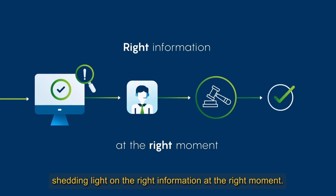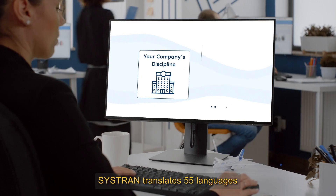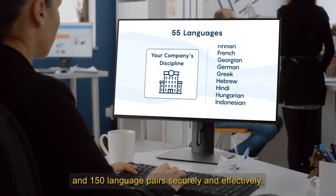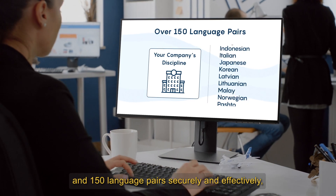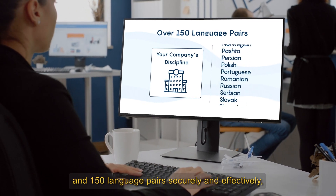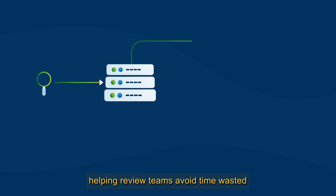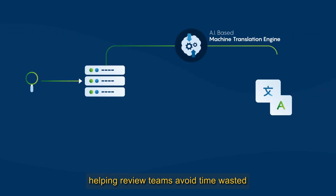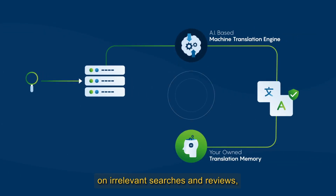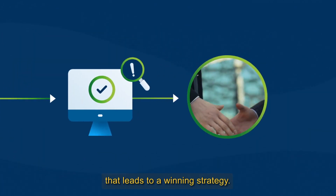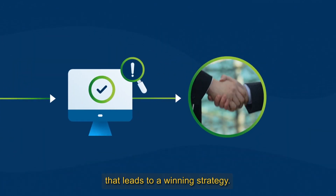Shedding light on the right information at the right moment. SysTran translates 55 languages and 150 language pairs securely and effectively, helping review teams avoid time wasted on irrelevant searches and reviews, laser-focusing their search for the key detail that leads to a winning strategy.